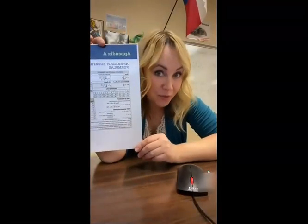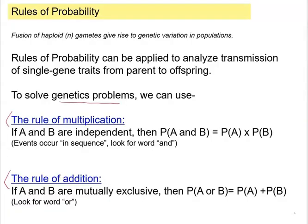I'm going to talk about the rules of probability and how to apply them in genetics. These, by the way, show up on the AP Biology exam formula sheet. Rule number one is the rule of multiplication. Events A and B are independent of each other — they basically occur in a sequence. The key word to look for is the word AND.